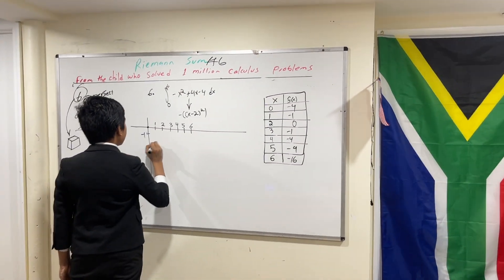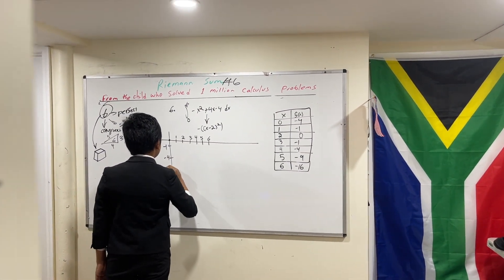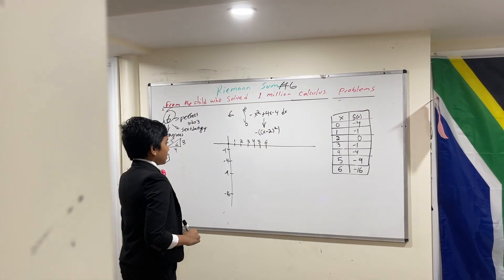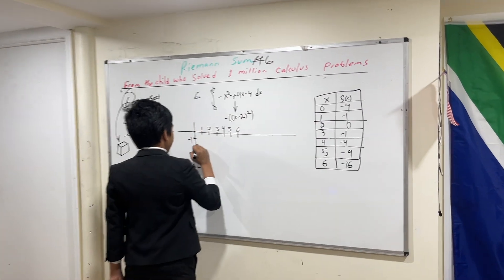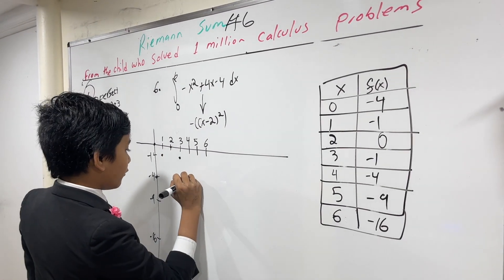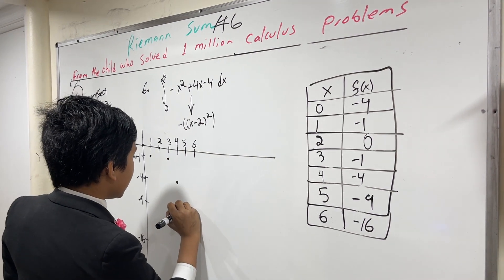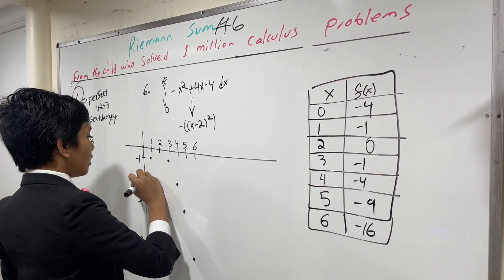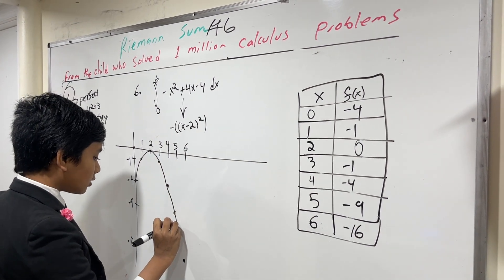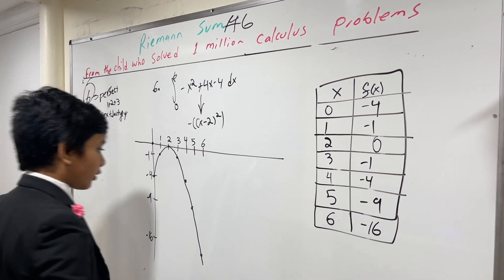All right, so let's graph that. Minus one, minus four, minus nine, and minus sixteen. So now we have: zero is minus four, one is minus one, two is zero, three is minus one, four is minus four, five is minus nine, six is minus sixteen. Cool curve. Yeah, we get the cool curve.